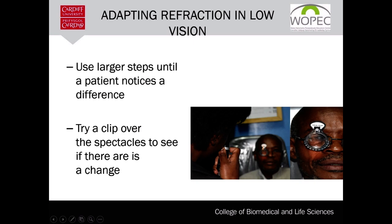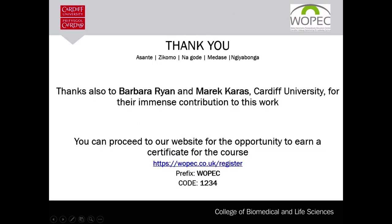Make sure your final result accounts for changes in distance. Convert the distances into diopters, subtract the retinoscope-to-patient distance from the retinoscopy result, and add the patient-to-chart distance to compensate for accommodation. This brings us to the end of the visual function assessment.